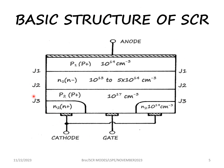In the basic structure we can see that there are four layers P, N, P, N and the doping levels of these layers are different. The P1 layer which forms the anode is heavily doped with the doping level of 10 power 19 holes per centimeter cube.